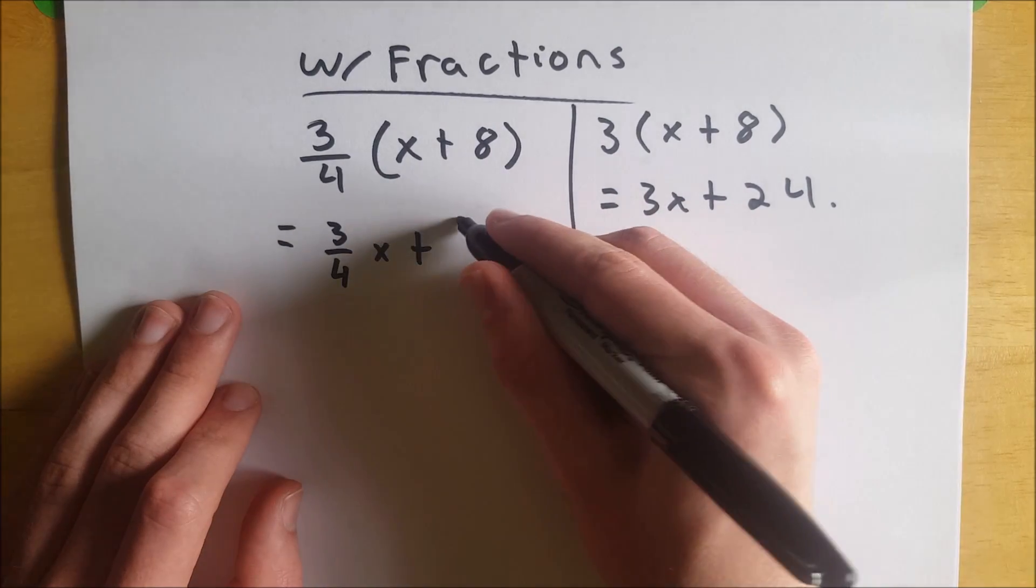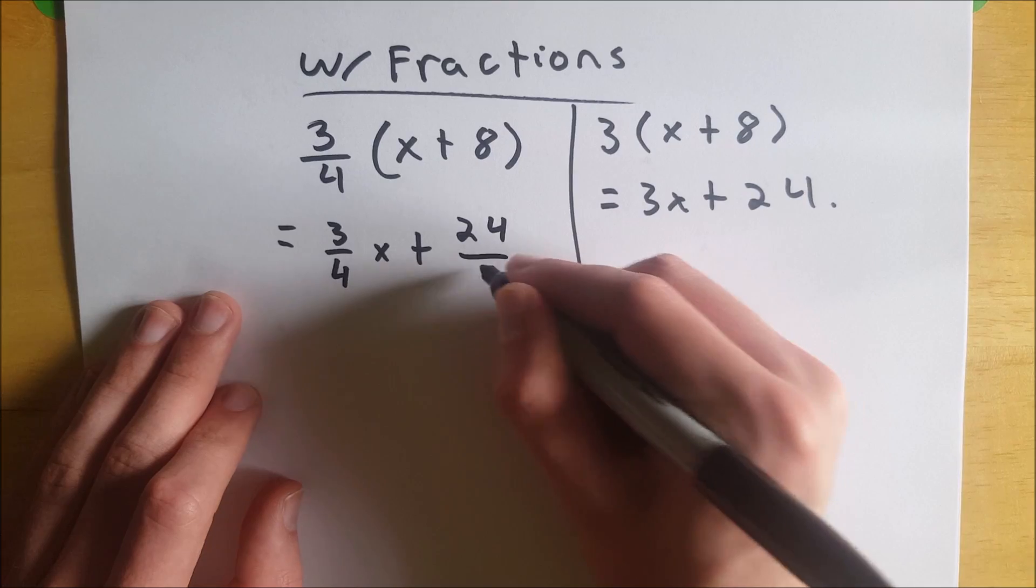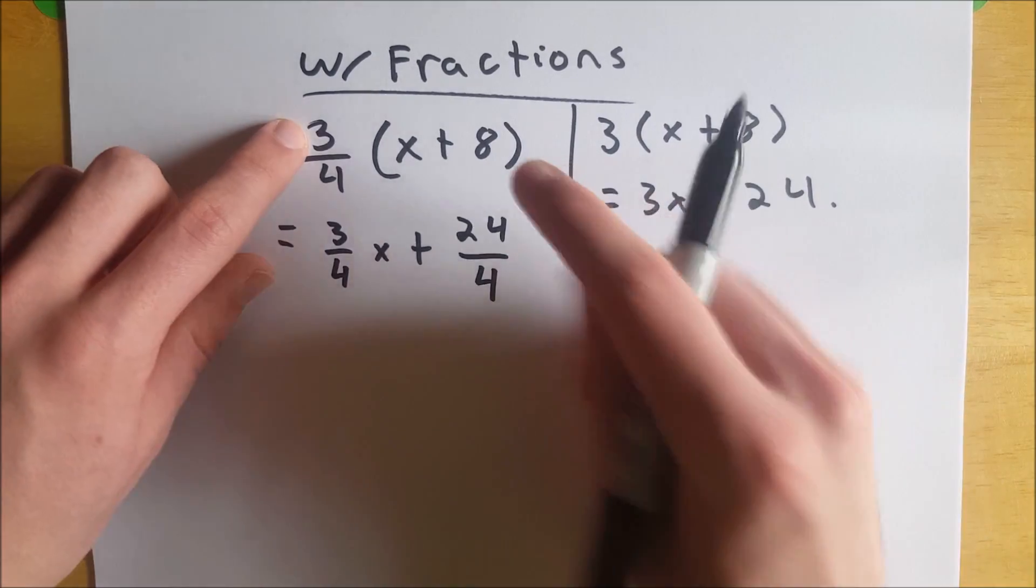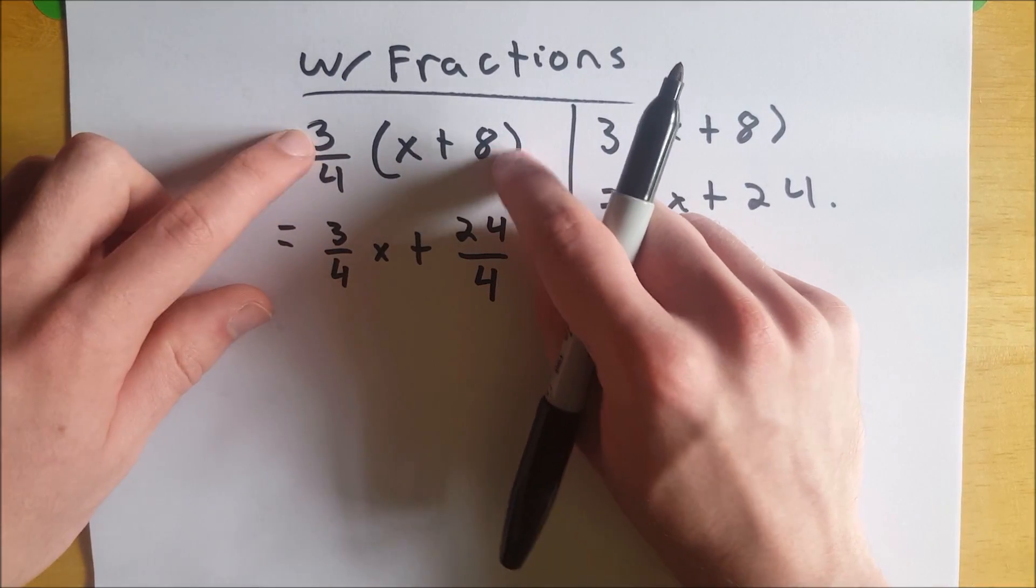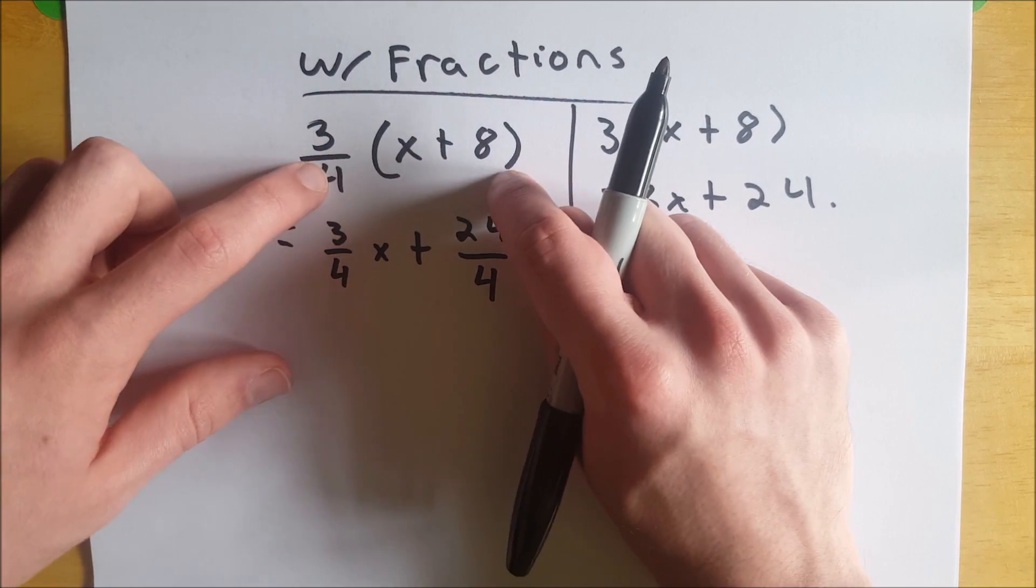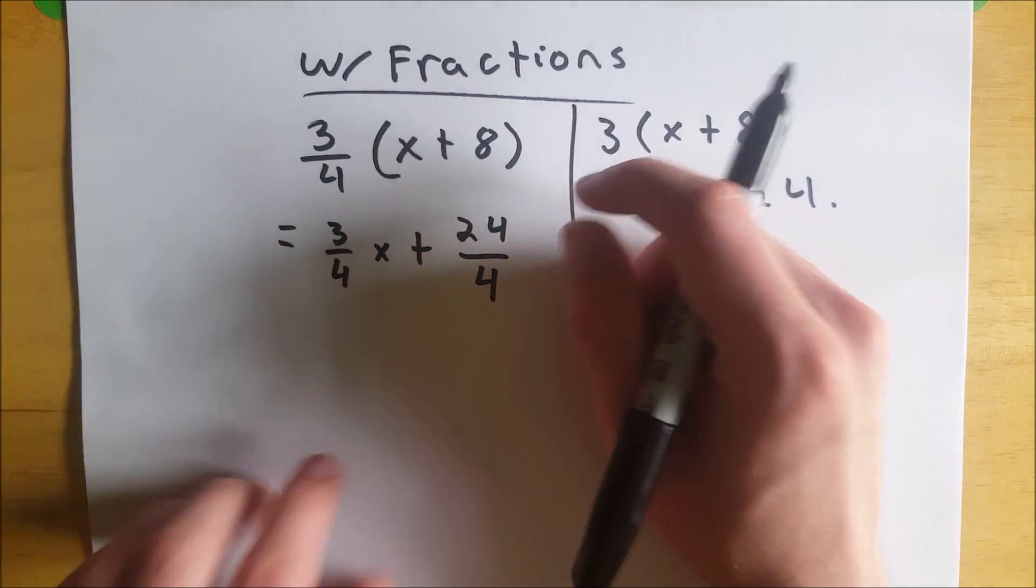3 times 8 is 24, so we know that's 24 divided by 4. That's 3 times the 8 over 1, which is just 3 times 8 divided by 4 times 1. That's 24 over 4.